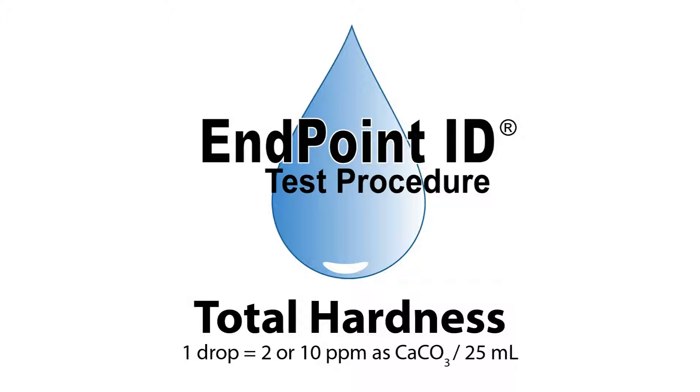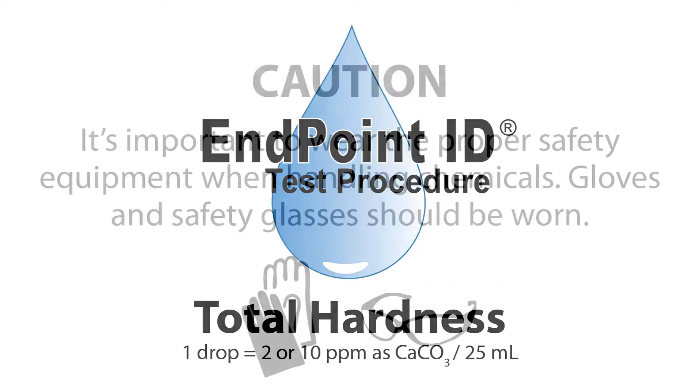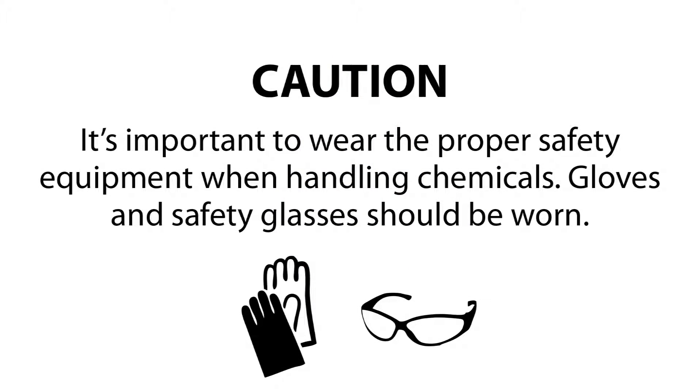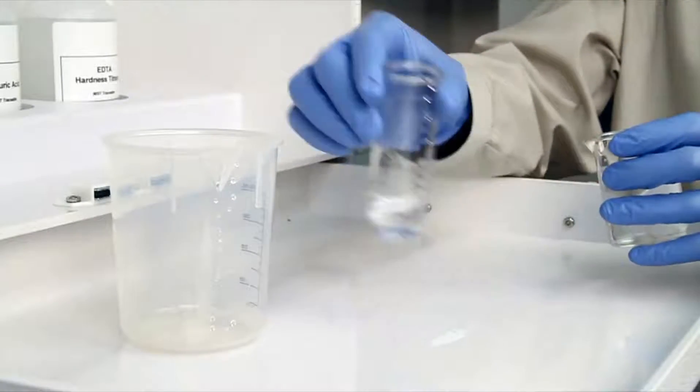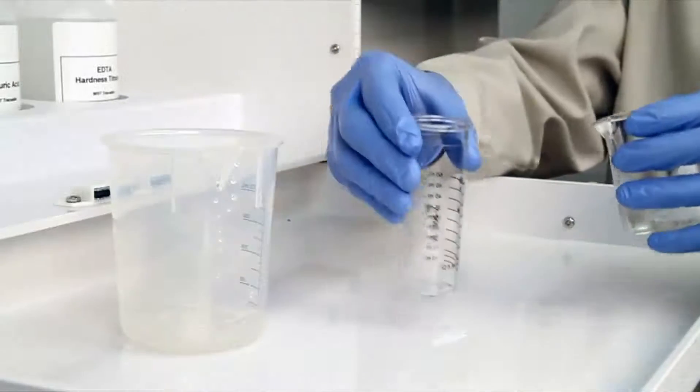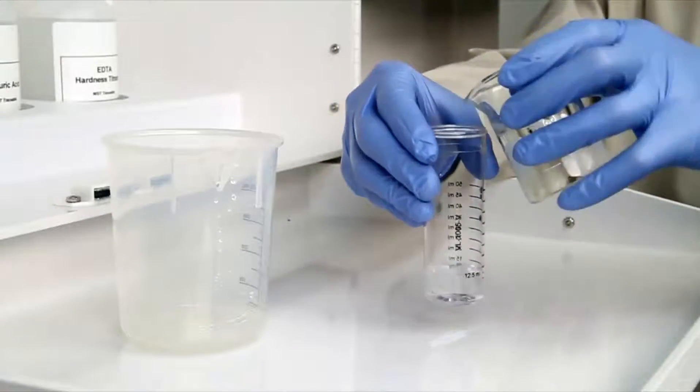This is a demonstration of a total hardness drop count test kit using Endpoint ID procedures. The first step according to the Endpoint ID procedure is to gather an accurate sample. The smallest change in sample size will lead to inaccurate results.